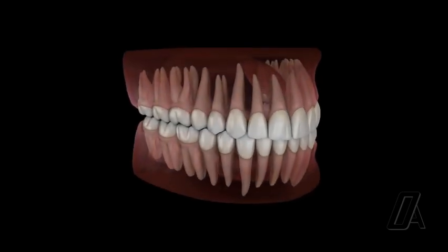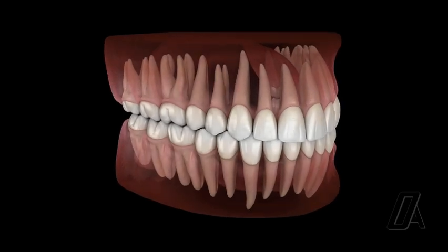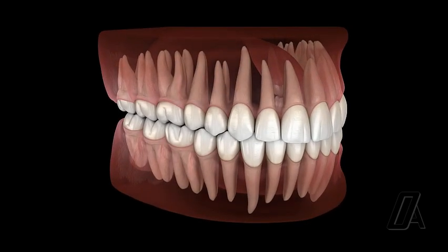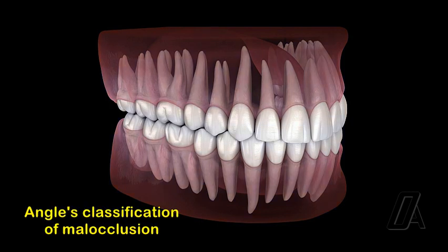According to Angle, the best balance, harmony, and proportions of the mouth and its relation to the other features require that there shall be a full complement of teeth, and each tooth shall be made to occupy its normal position. Based on this principle, Angle developed a classification of malocclusion in the Dental Cosmos in the year 1899.